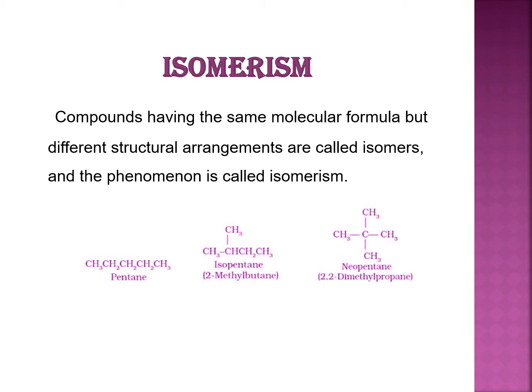We will explain this with the help of the pentane molecule. The pentane molecule can exist in three isomeric forms: n-pentane, isopentane, and neopentane.